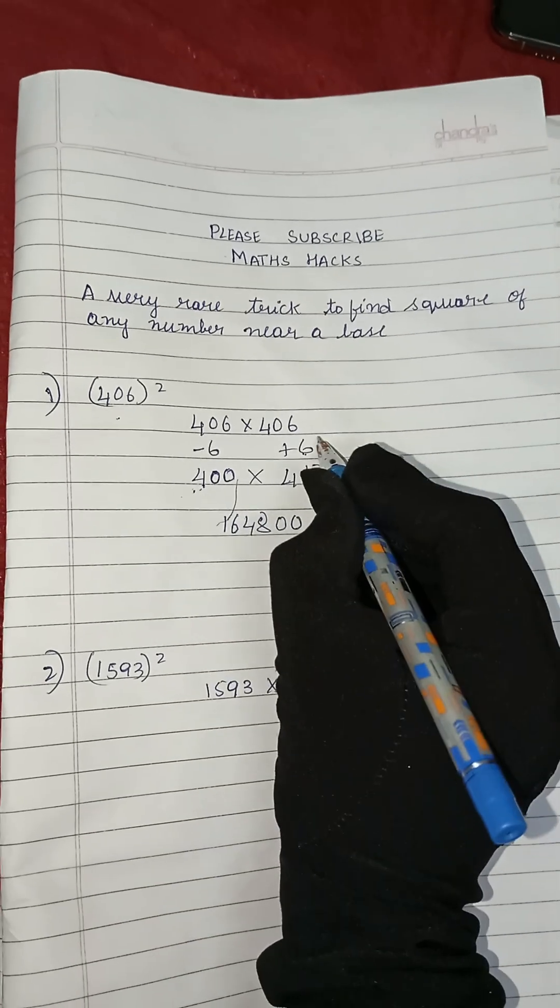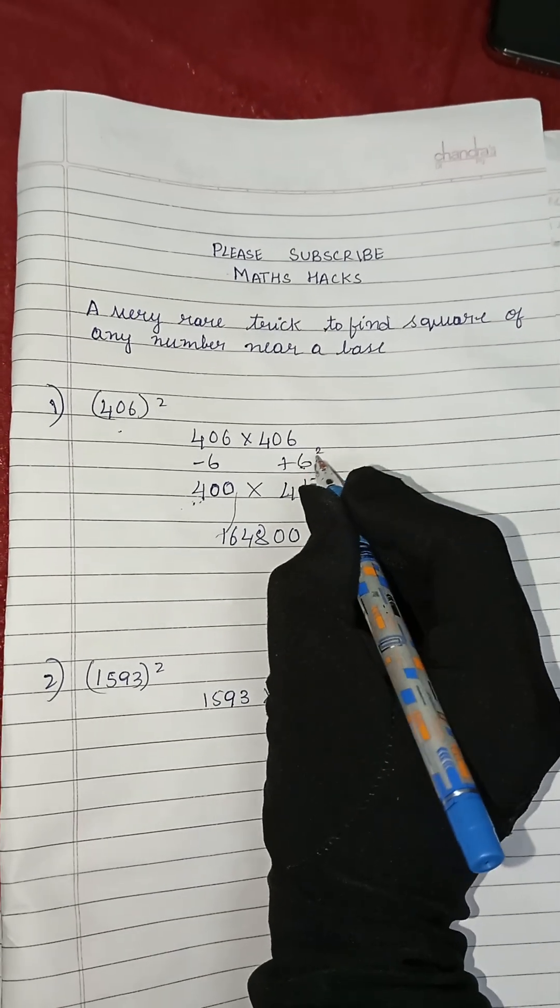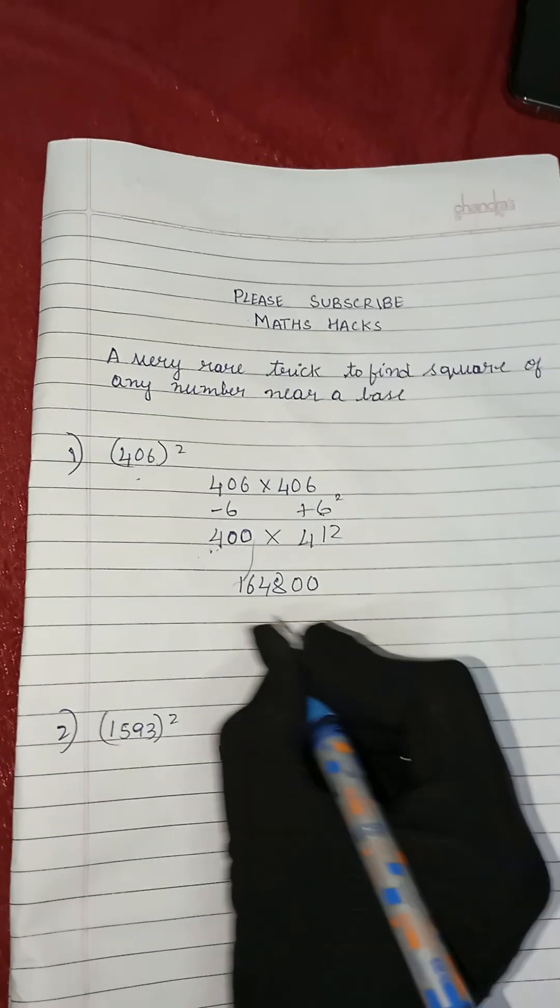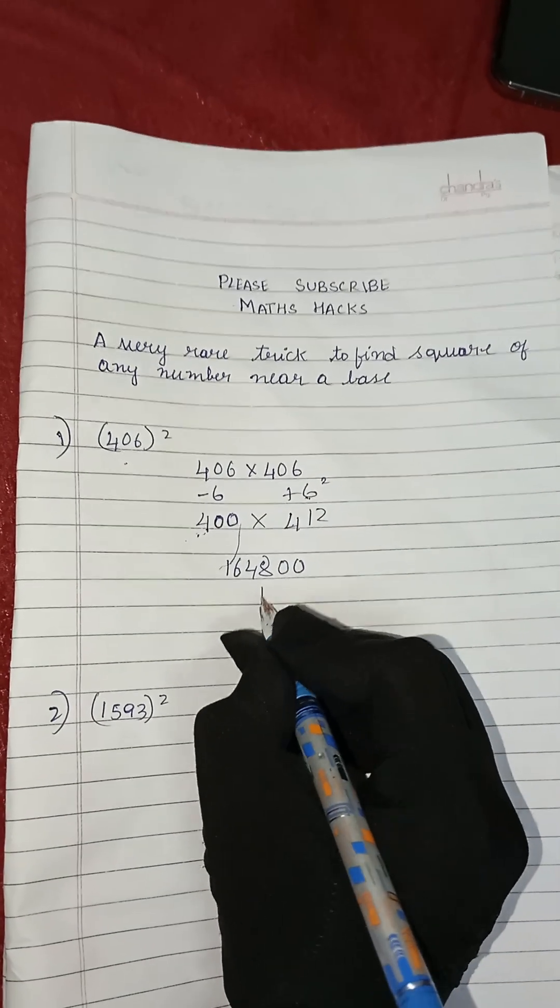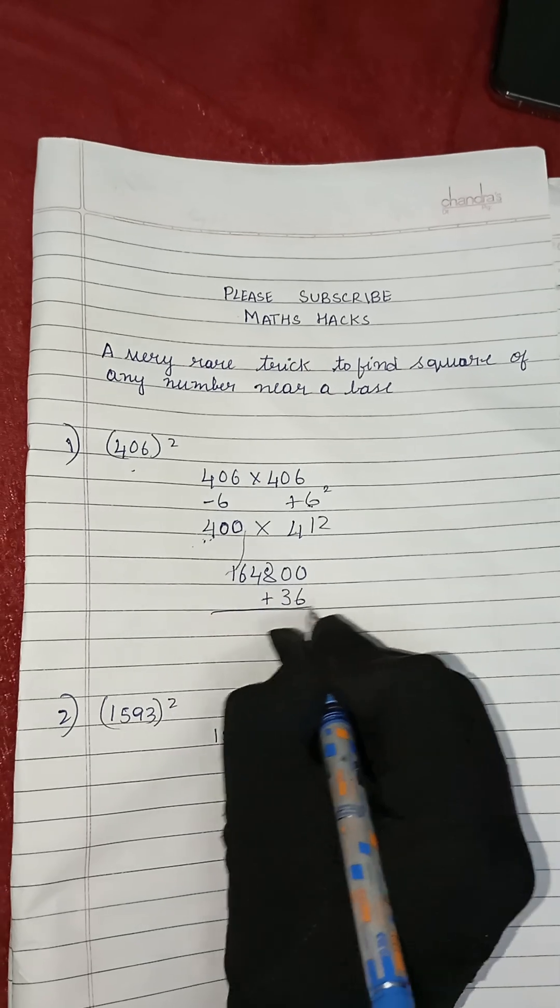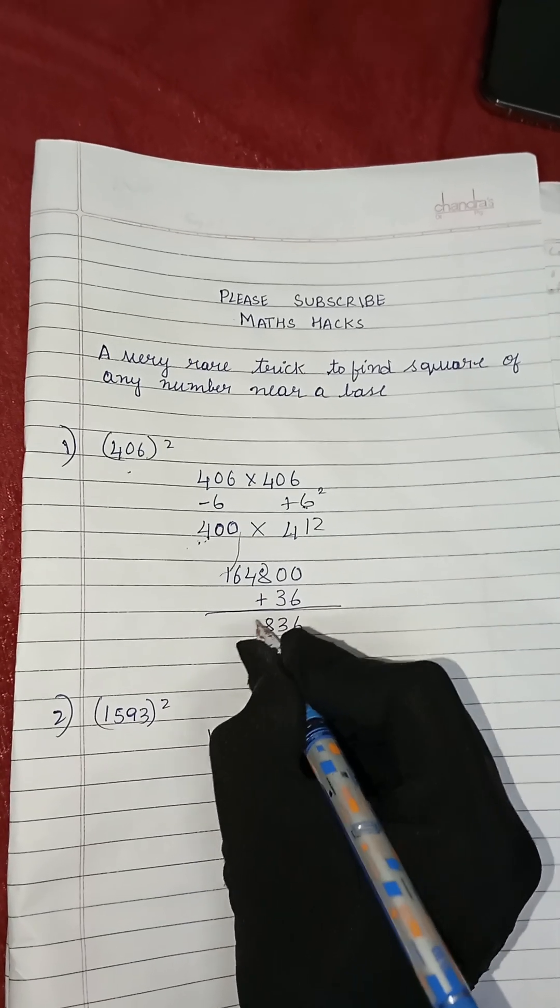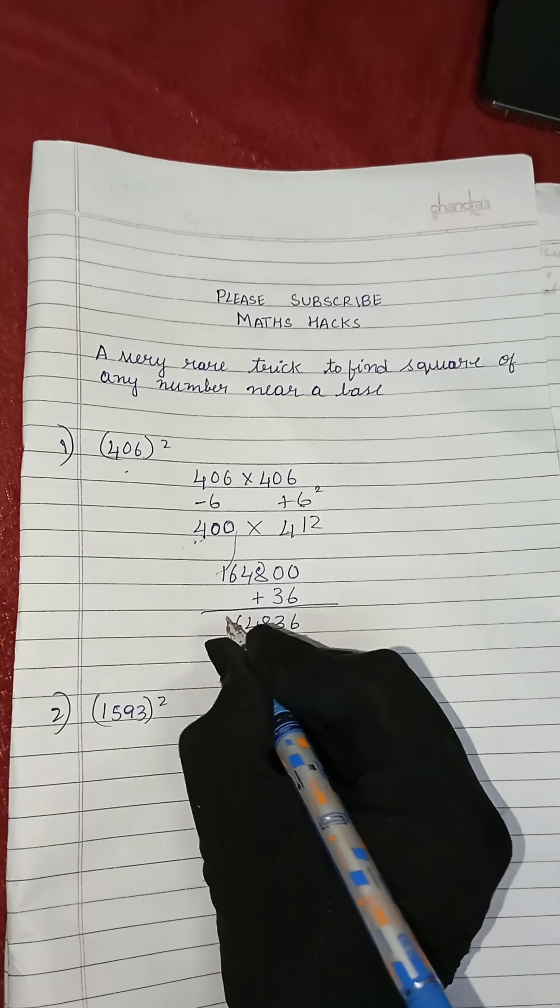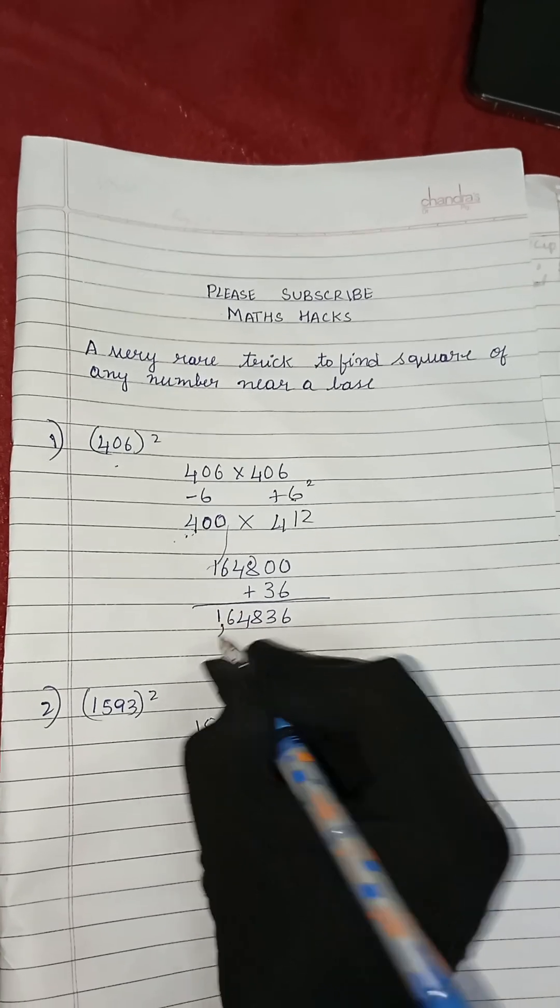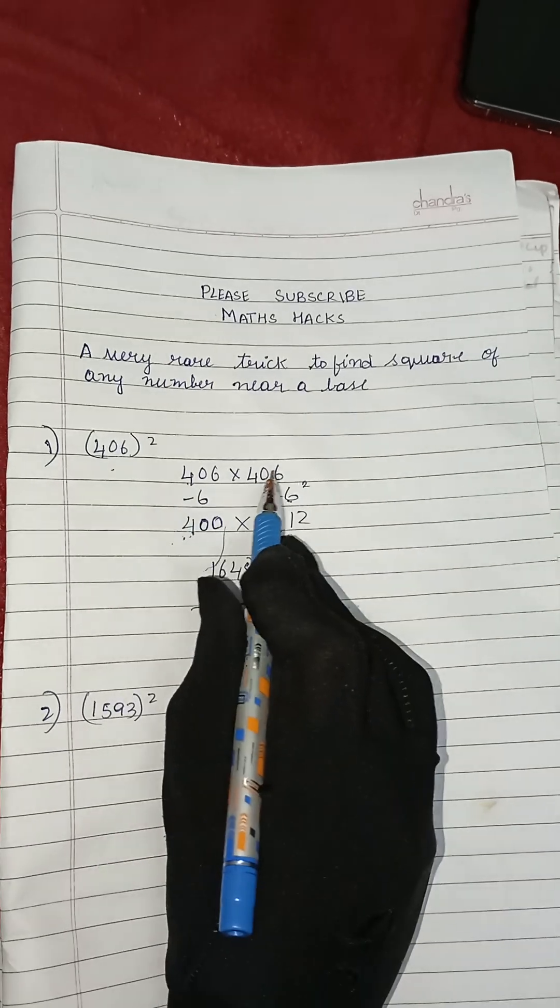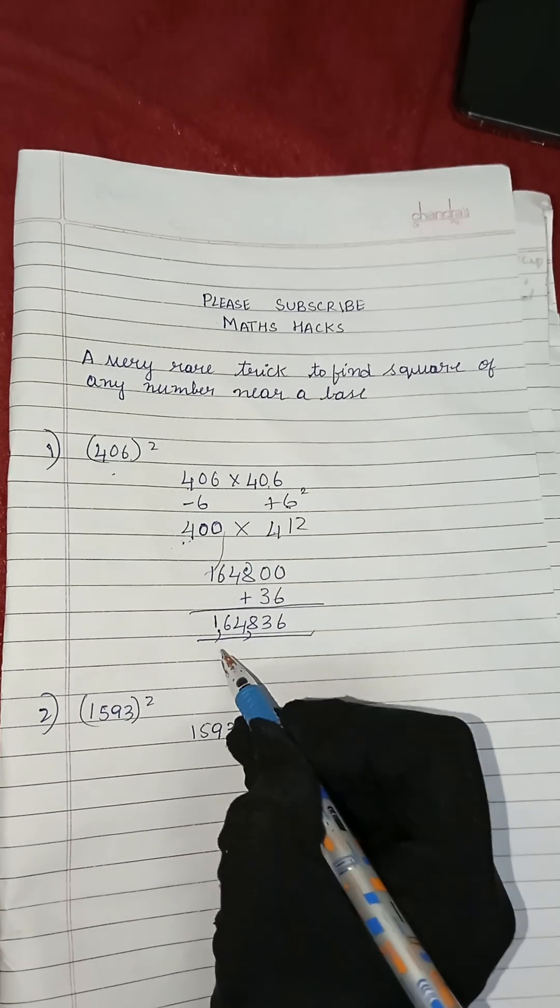Now the next step is we will square this 6. The square of 6 is 36 because 6 times 6 is 36. Now we will add 36 to this number. After adding it we will get 164836. So 406 multiplied by 406 gives you the answer 164836.